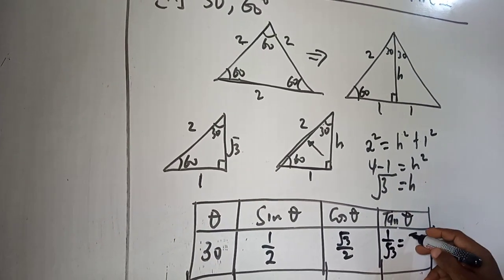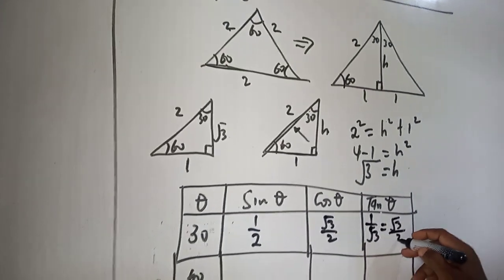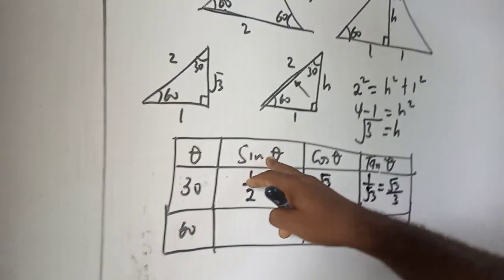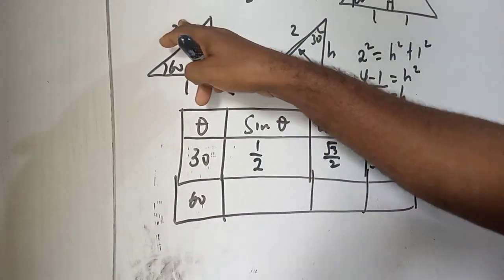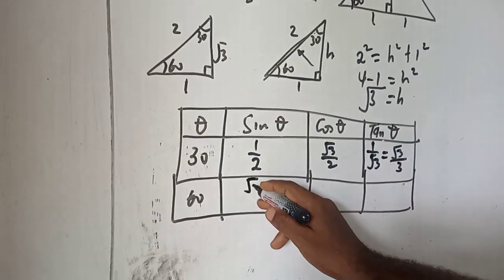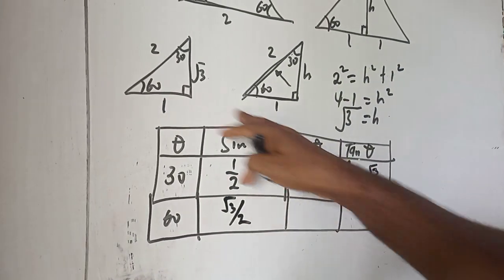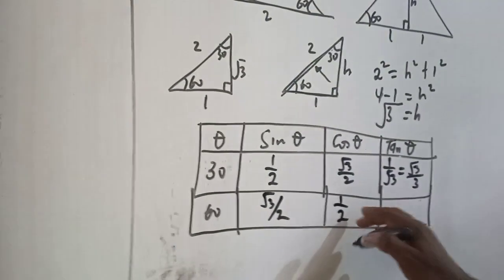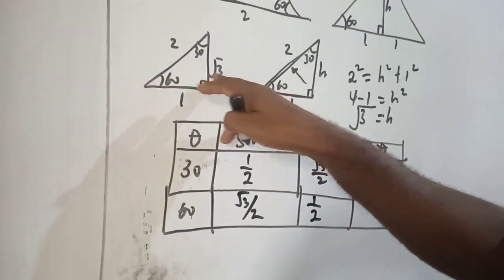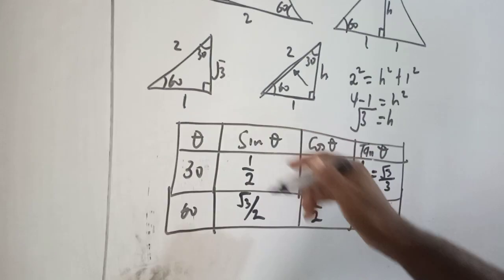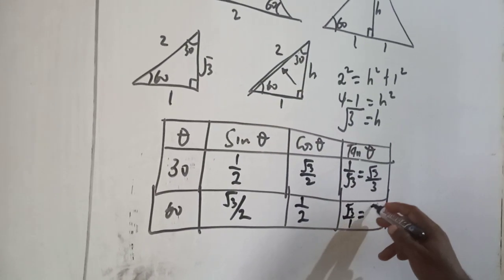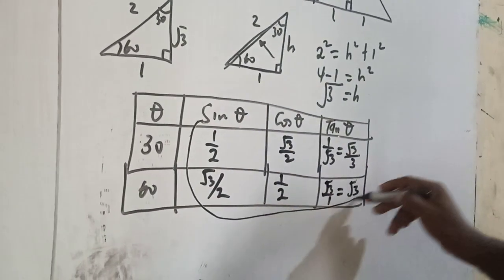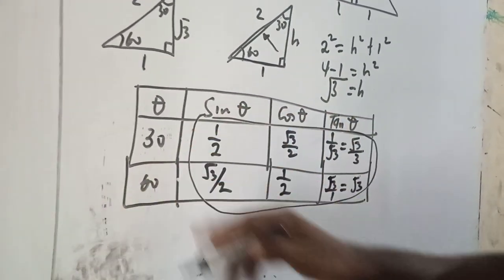We can also write 1 over root 3 as root 3 over 3. Now for 60 degree: sine 60 is opposite over hypotenuse, that's root 3 over 2. Cos 60 is adjacent over hypotenuse, that's 1 over 2. And tan 60 is opposite over adjacent, that's root 3 over 1, which equals root 3. So these are the values for the trigonometry ratio of angle 30 degree and 60 degree.